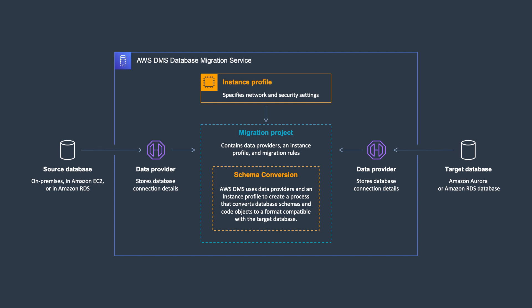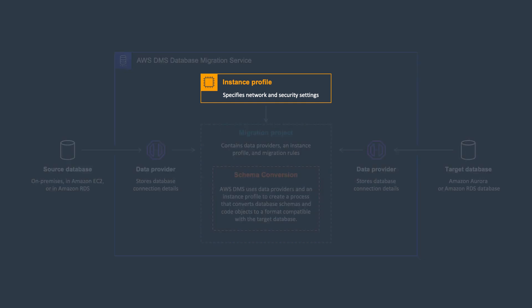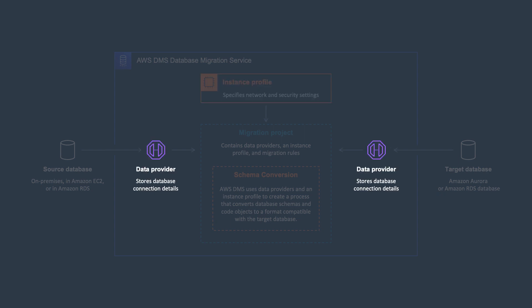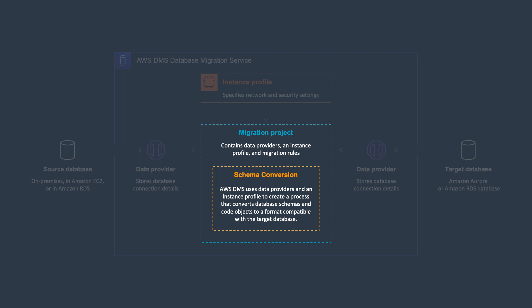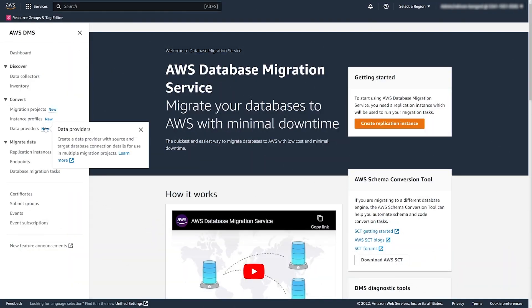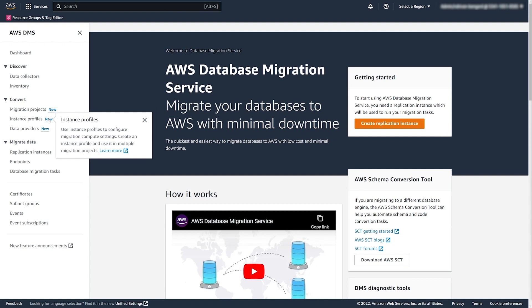At a high level, DMS Schema Conversion operates with the following three components. An instance profile specifies network and security settings. A data provider stores database connection credentials. A migration project contains data providers, an instance profile, and migration rules. AWS DMS uses data providers and an instance profile to create a process that converts database schemas and code objects.